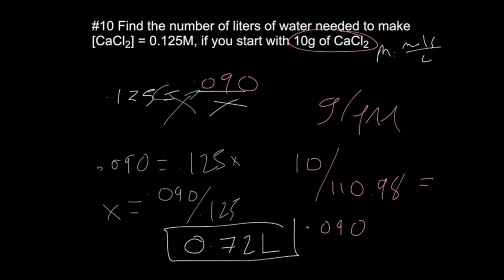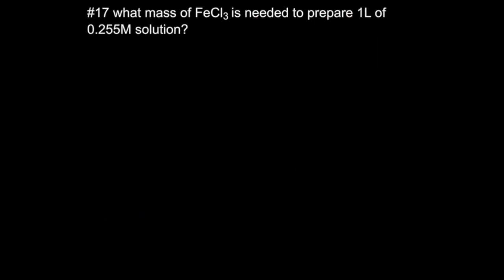Now, let's go look at the back page, which gets people scared because they're just word problems, but they're actually not much different. So on the back, let's take a look at what I think is the hardest problem on the back, number 17. It asks, what's the mass of iron three chloride? Well, that's FeCl3 needed to prepare one liter of 0.255 molar solution.